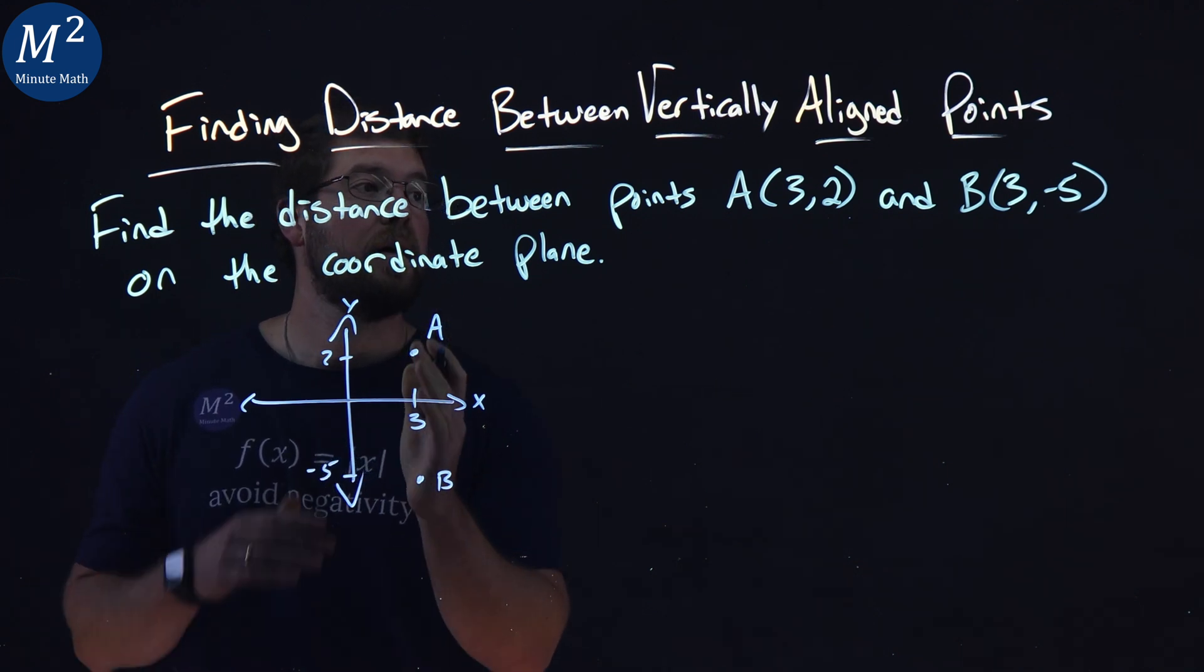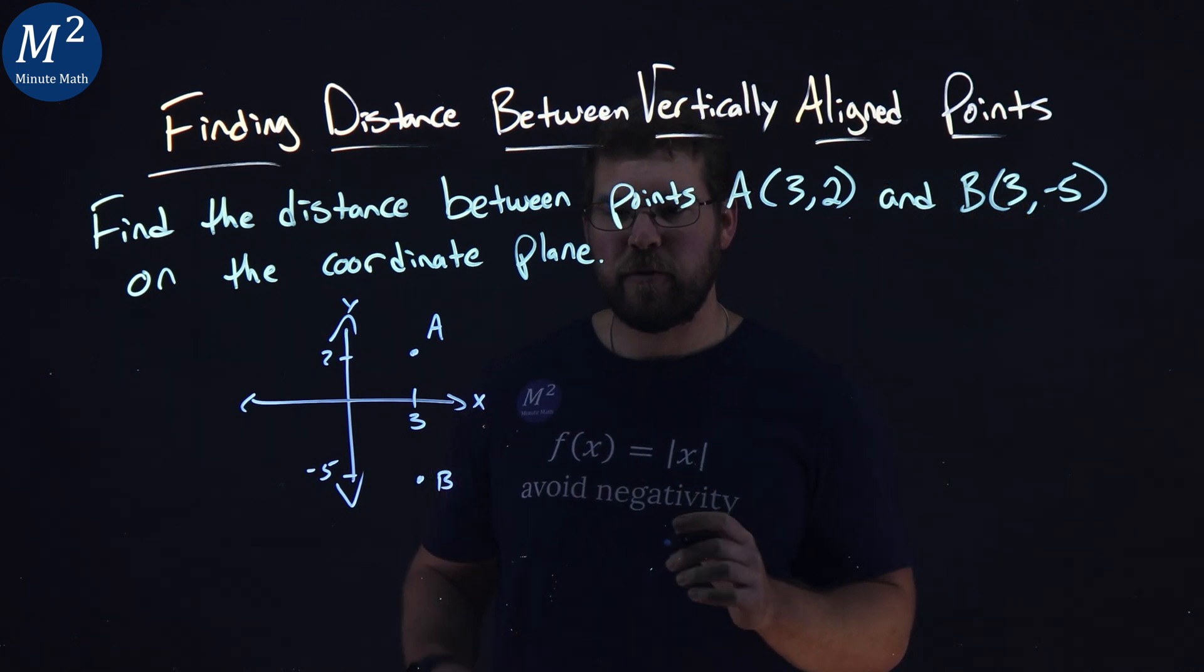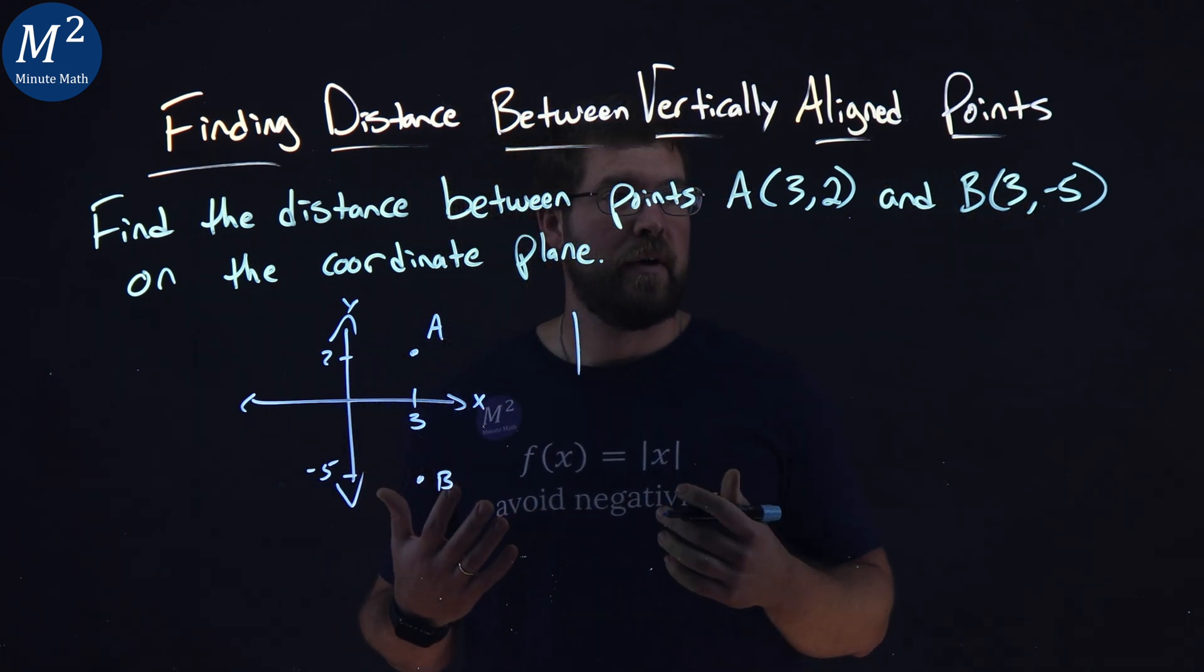Since they're vertically aligned here, we want to find the distance of their y values, that difference there. So we're going to use the absolute value.